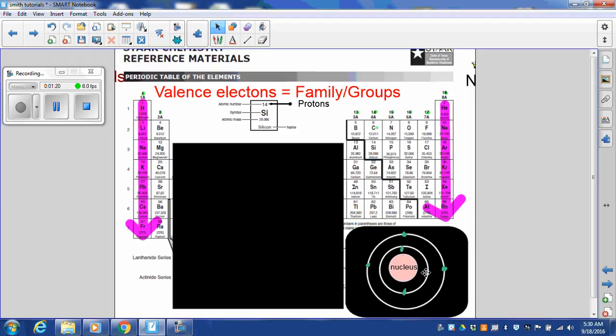So since this has 1, 2, 3 valence electrons, that means it is in family group 13. It's one of these elements. Now, if I knew how many protons were in the nucleus, protons is the atomic number, I would be able to tell you exactly which element it is.